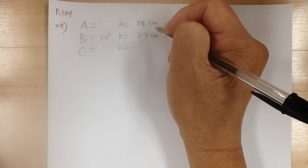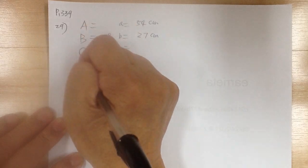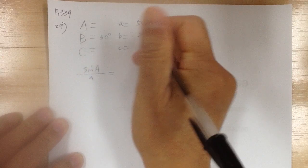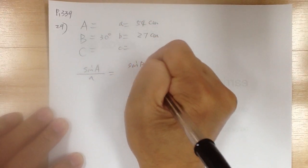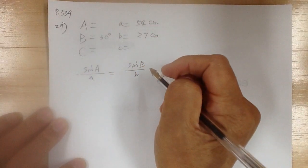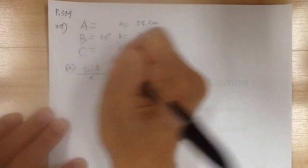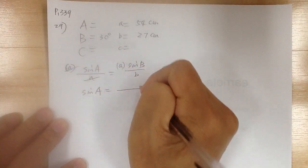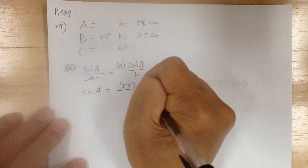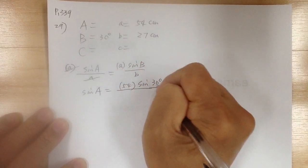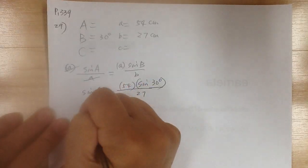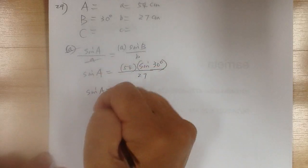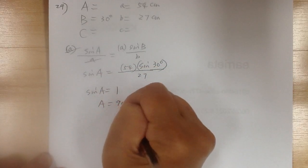First, let's go ahead and get angle A. So sine A over a equals sine B over b. Multiply both sides by a, this will cancel out. So sine A equals 54 times sine of 30 degrees over 27. So sine A equals 1, and so angle A equals 90 degrees.